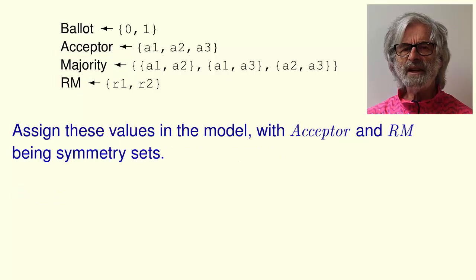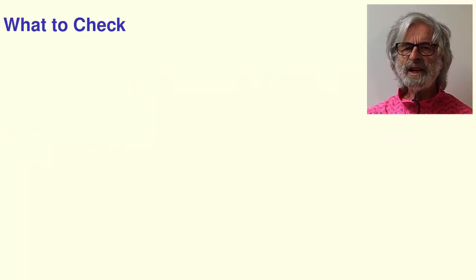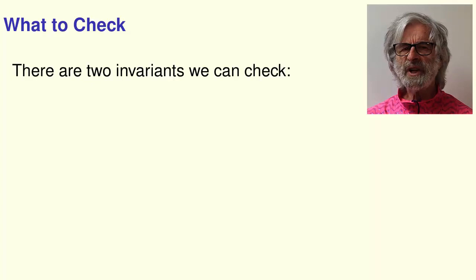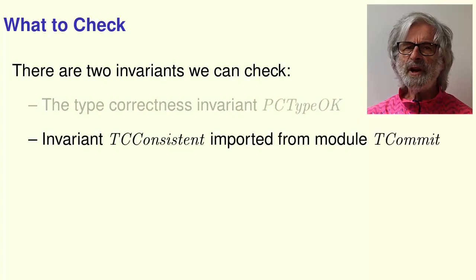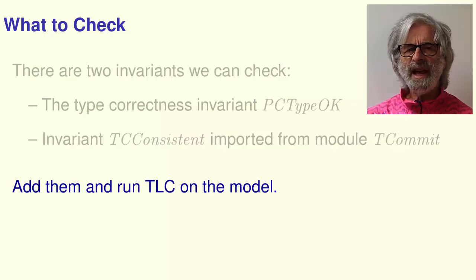Assign these values in the model, letting acceptor and RM be symmetry sets. We should check that the algorithm is correct. We'll see in a later video how to check that it implements transaction commit. For now, there are two invariants we can check: the type correctness invariant PC type ok that we looked at earlier, and the invariant TC consistent, which is imported with an instance statement from module t commit. Add these invariants to the what to check part of the model and run TLC on the model.